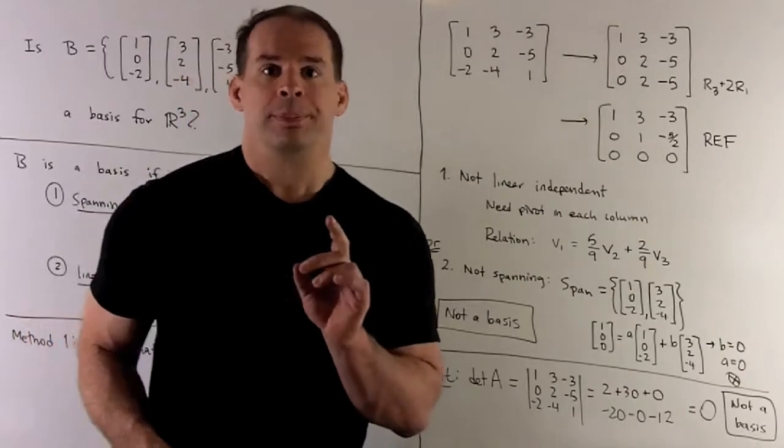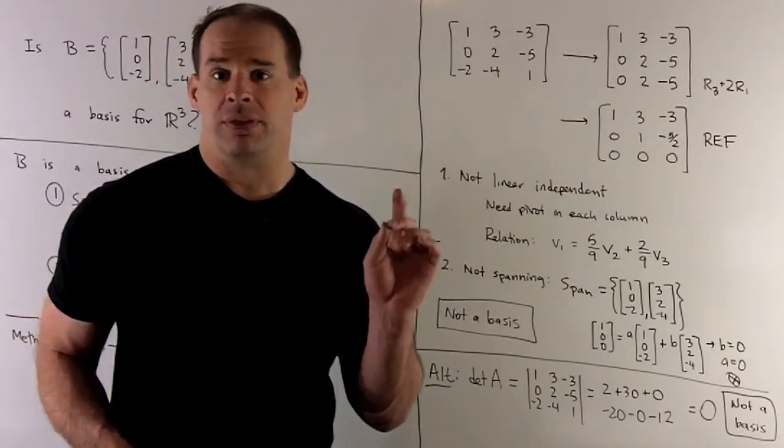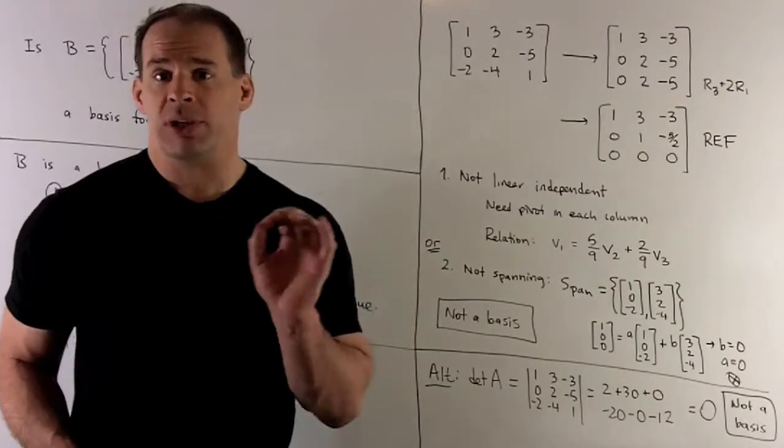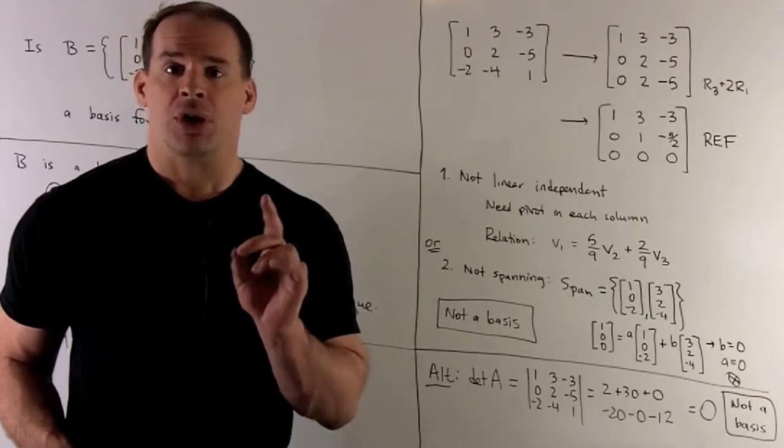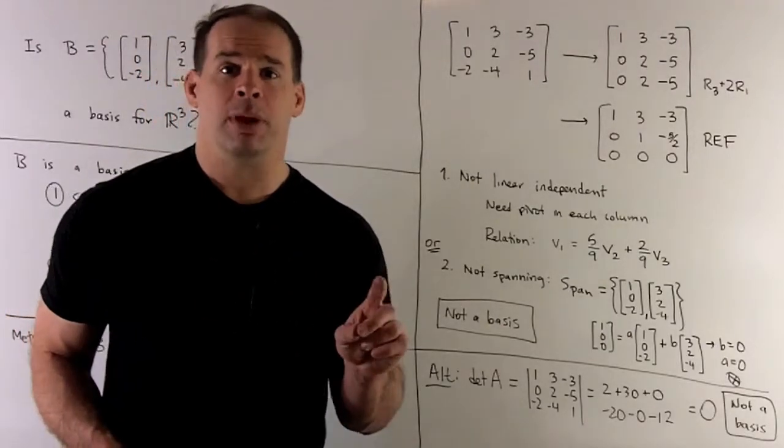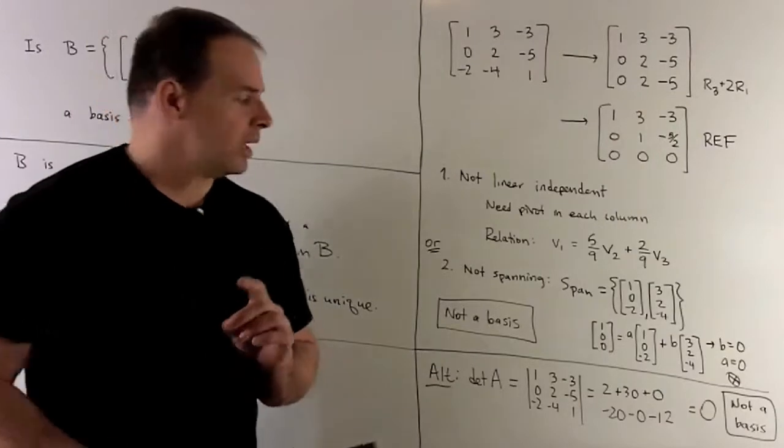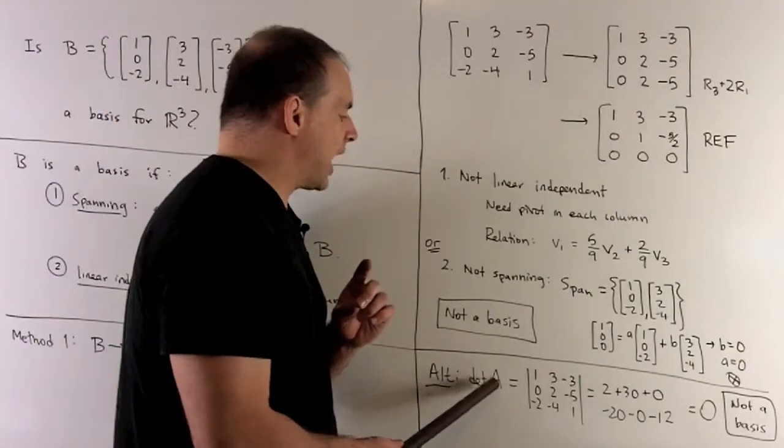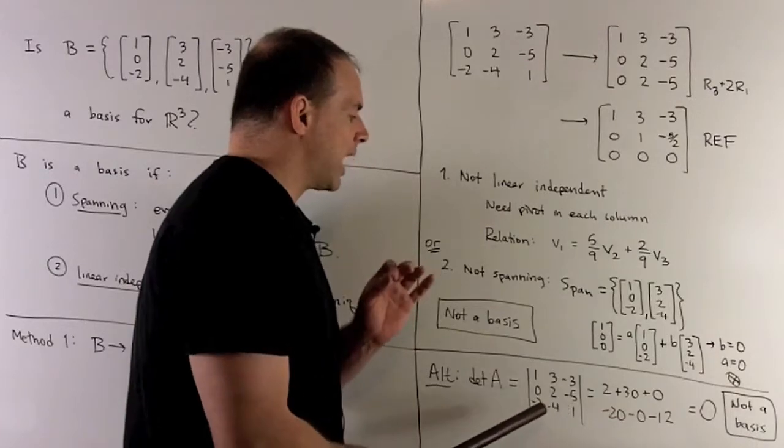Alternative method: We have three vectors checking for a basis of three-space. We load them into a matrix and check the determinant. If we're looking for a pivot in each column, we'll have that if the determinant is non-zero. What happens when we take the determinant of matrix A with our vectors as columns?